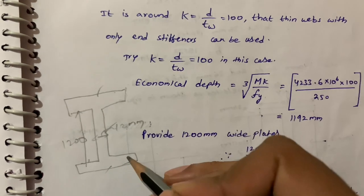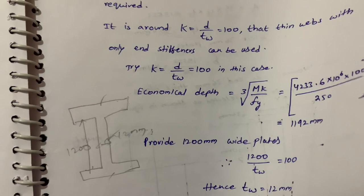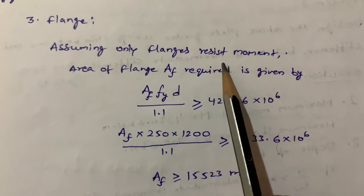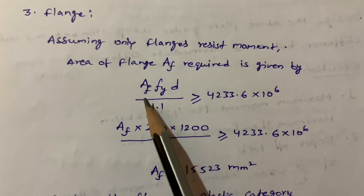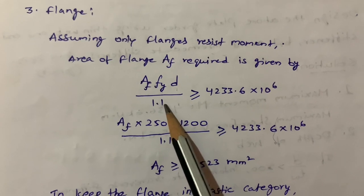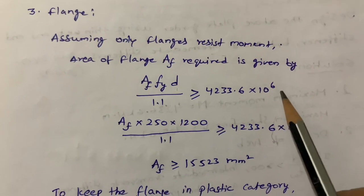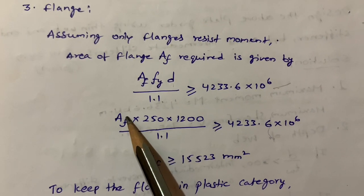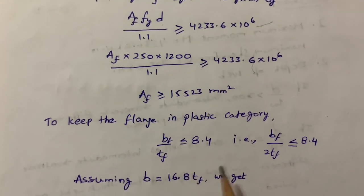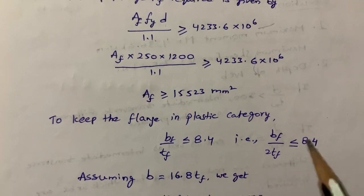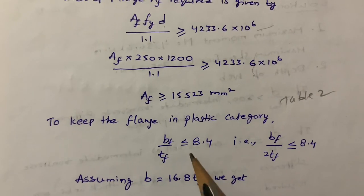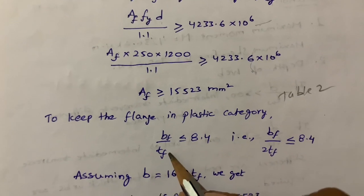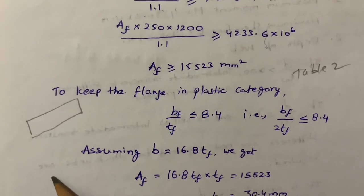Now we calculate the flange. Assuming only flanges resist moment, the formula is: Area_f × fy / (fy × d / γm0) = 4233.6 × 10^6. We solve for the flange area. Then we check whether it is a plastic section. From Table 2, the condition B/TF ≤ 8.4 applies. Since there are two flanges, the condition becomes B/(2TF) ≤ 8.4, giving B = 16.8 × TF.